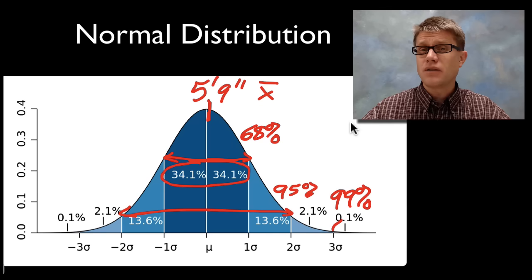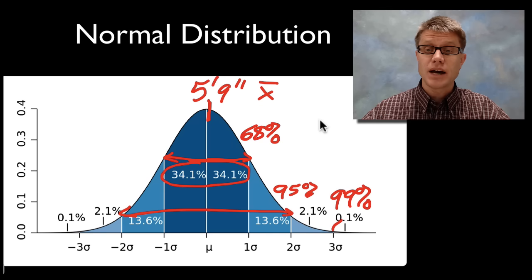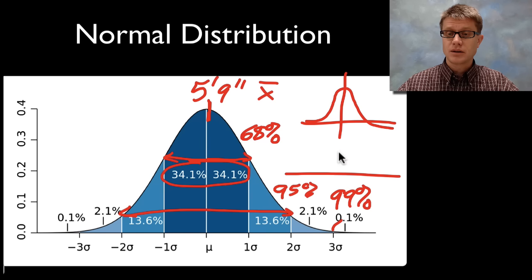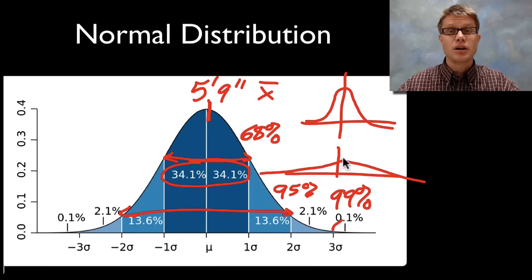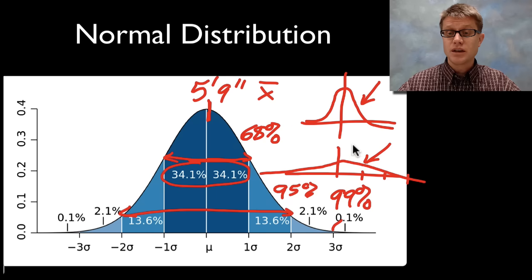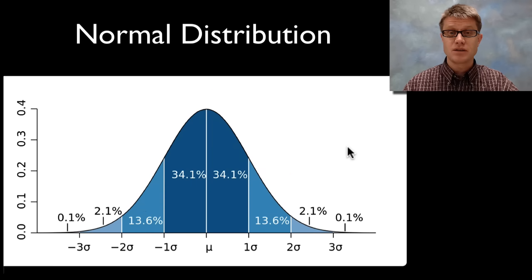The standard deviation is going to vary depending on the data that you collect. If we had two curves — one narrow and one wider — the narrower one is going to have a smaller standard deviation. They both have standard deviations with 68, 95, and 99% of the people. But the wider, more spread out curve is going to have a higher standard deviation.